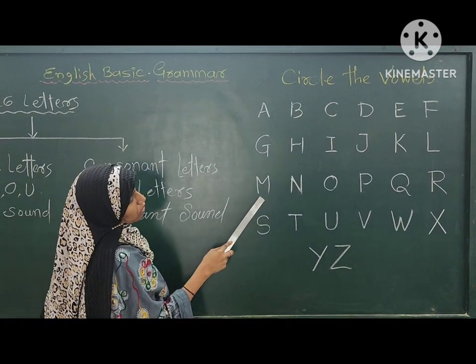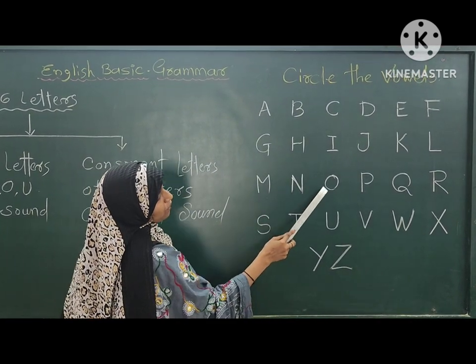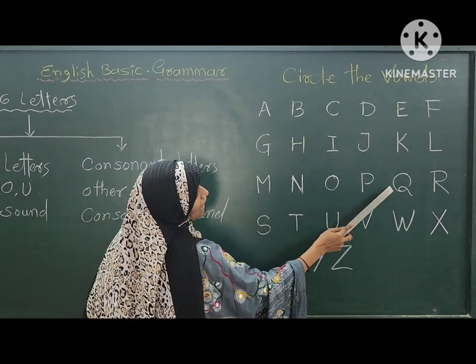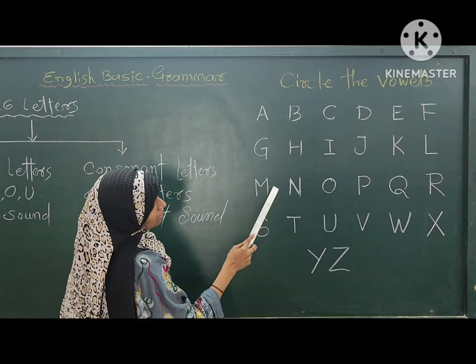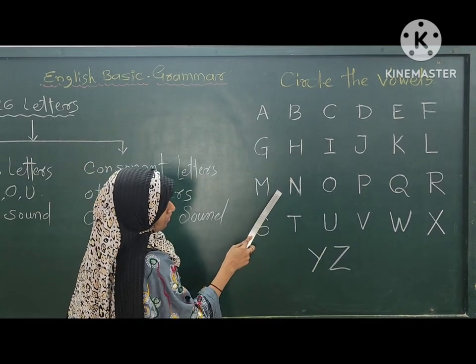Now we are talking about M, N, O, P, Q, R. Here, O is the vowel and the others are consonants.